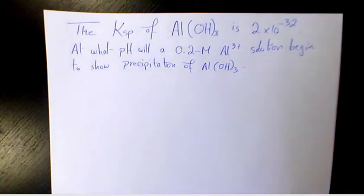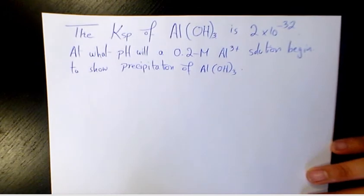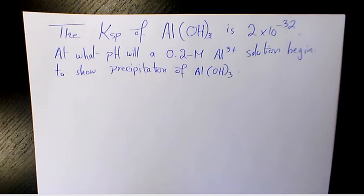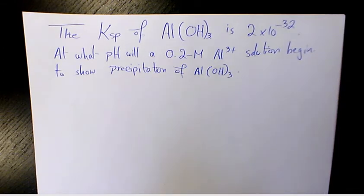What's up guys, this is Mas here. Welcome to another video. In this video I want to talk about precipitation reactions. The Ksp of aluminum hydroxide Al(OH)₃ is 2×10⁻³². At what pH